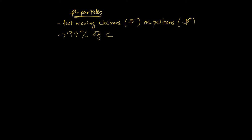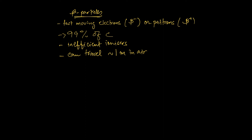Beta particles have half the charge and are much less massive than alpha particles. As a result, they are much less efficient at producing ion pairs. However, they are far more penetrating than alpha particles and can travel up to about a meter in air — meaning they can penetrate cards and sheets of aluminum up to a few millimeters thick. Like alpha particles, they are affected by electric and magnetic fields, but because they carry a negative or positive charge, they can be deflected in the same direction as or the opposite direction to an alpha particle. Also, because they are much less massive, they experience a much larger deflection when moving at the same speed as an alpha particle.